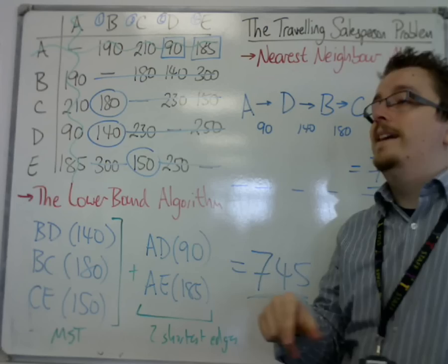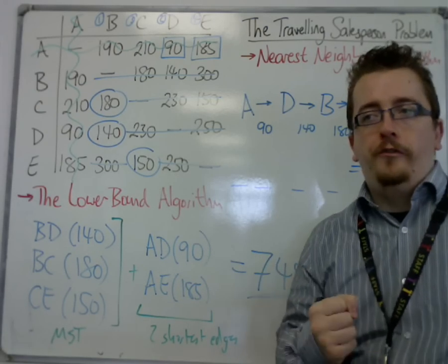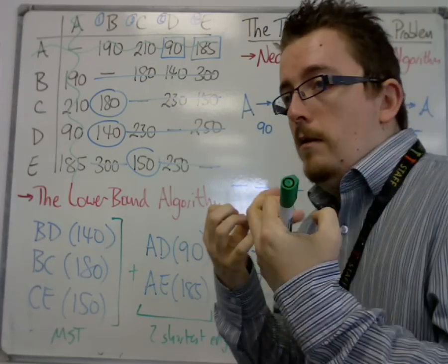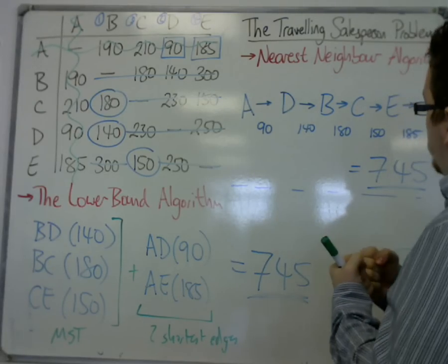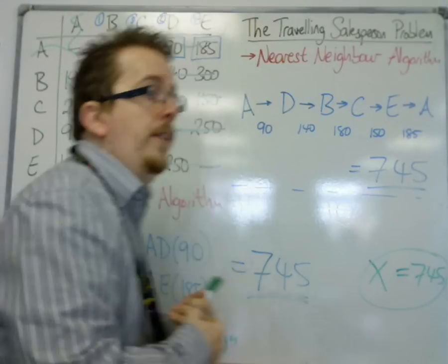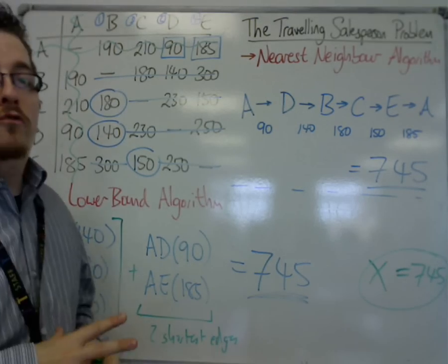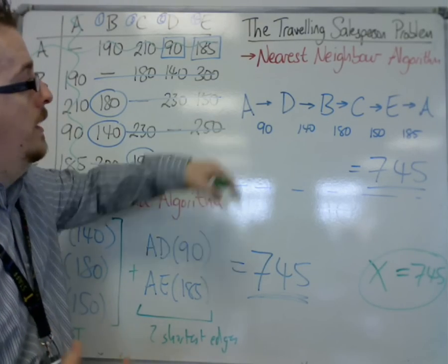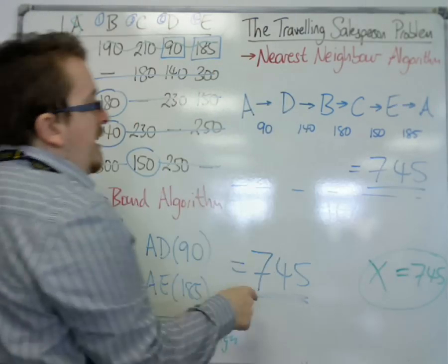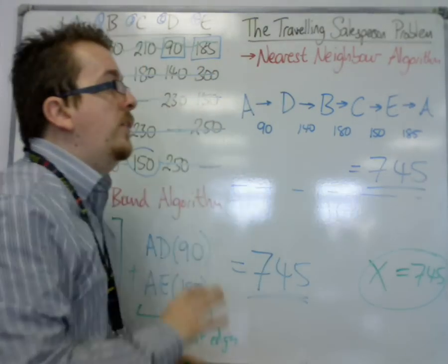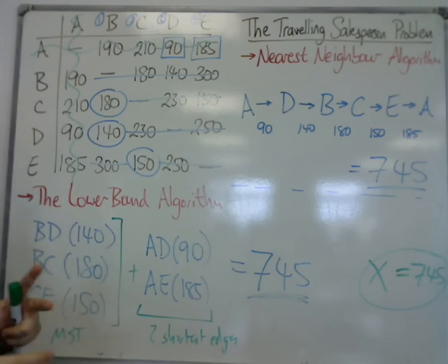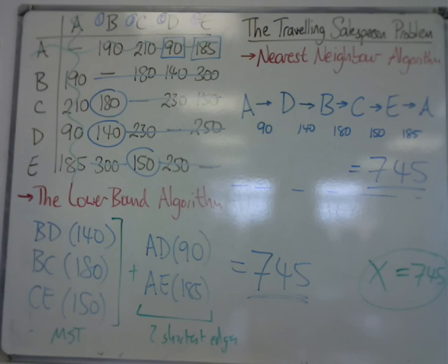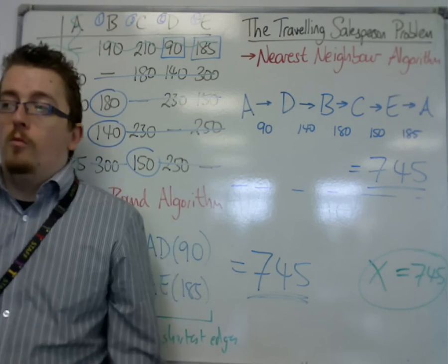In this one case, the travelling salesperson problem has been solved. The nearest neighbour algorithm and the lower bound algorithm gave me both the same total. In the case of lower bound algorithm, it doesn't give you a route round. It just gives you a number. But we now have a route, a tour, that is equal to my lower bound. So ADBCEA is an example of the shortest route that I could possibly find for this matrix. So they're the conclusions that we can make from what we have found.